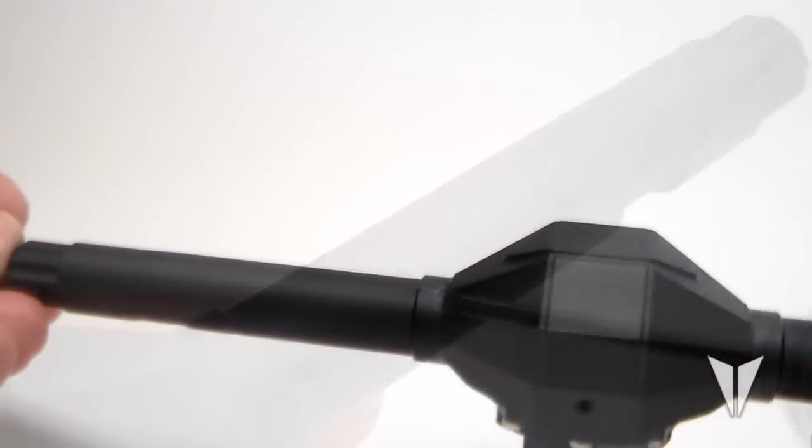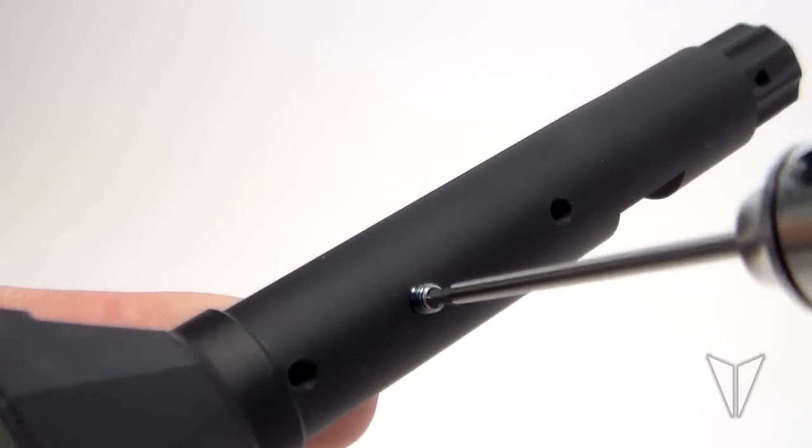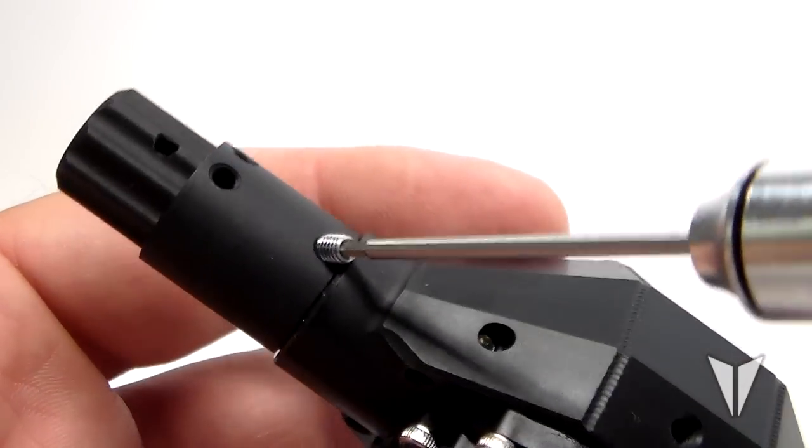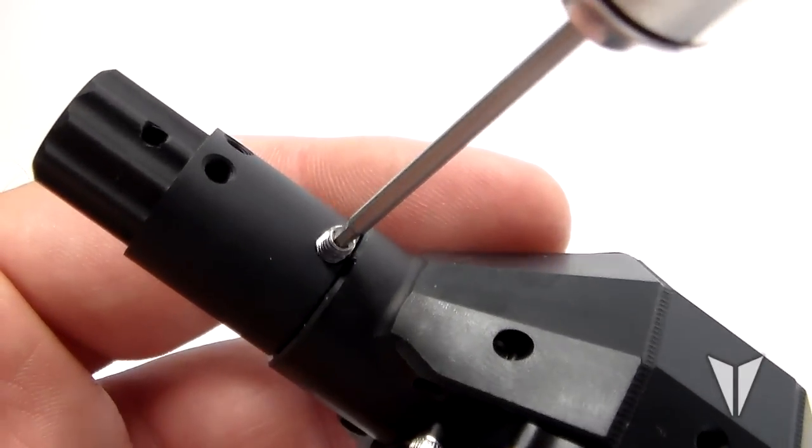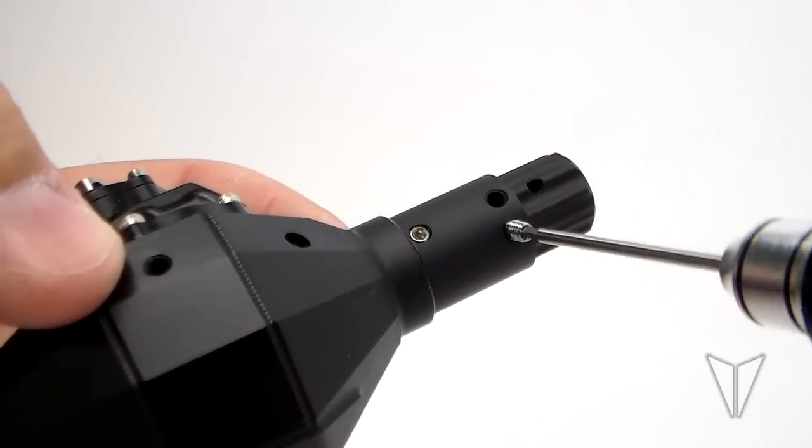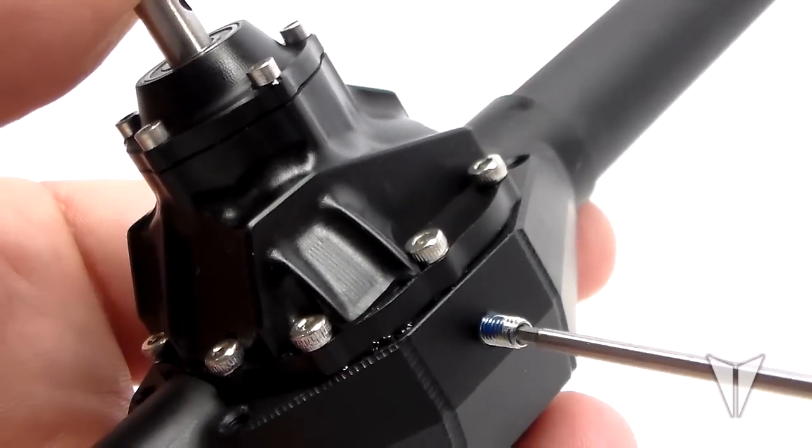Next I'm going to use the M3 by four millimeter and M3 by six millimeter set screws to seal the unused mounting holes in the axle. Don't forget to use some blue thread lock here and on all metal to metal connections.